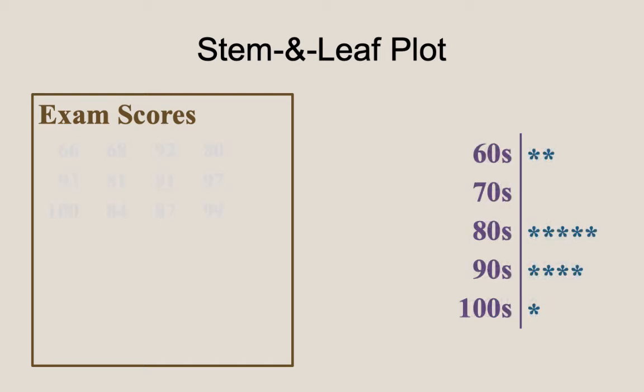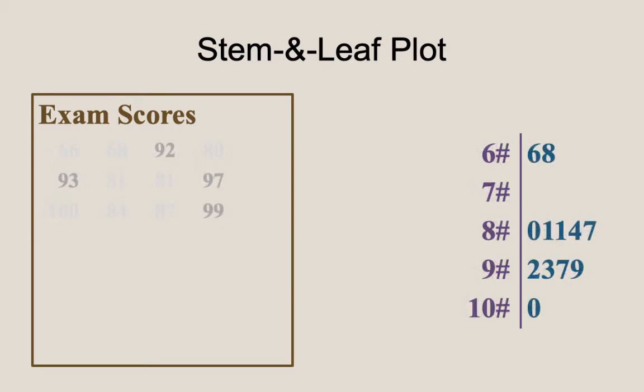In the tally plot, we saw that there were four values in the 90s, but these could have been any four numbers from 90 to 99, including repeats. From the stem-and-leaf plot, we see that the actual data values in the 90s were 92, 93, 97, and 99.